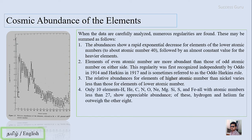The fourth observation is that only ten elements—hydrogen, helium, carbon, nitrogen, oxygen, neon, magnesium, silicon, sulfur, and iron, all with atomic number less than 27—show appreciable abundance, and of those hydrogen and helium far outweigh the others.